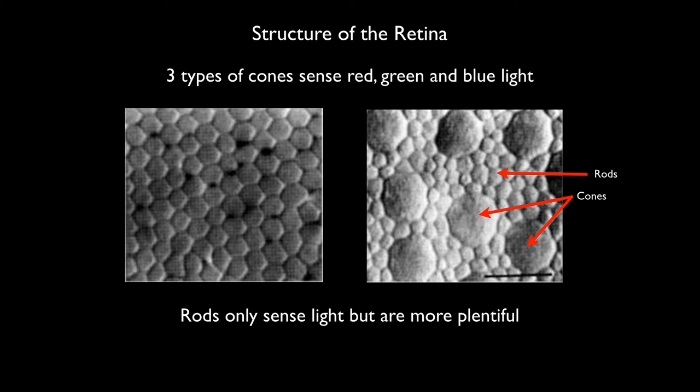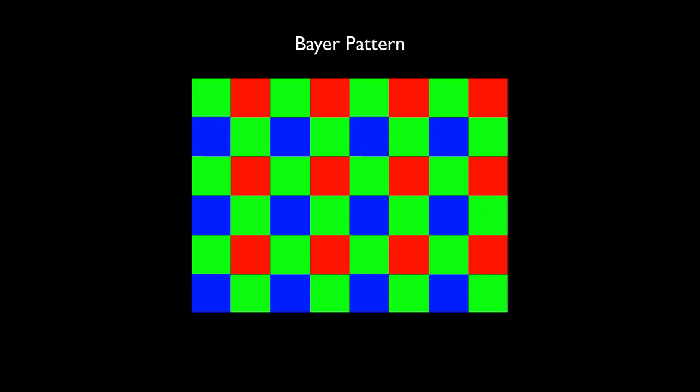Notice how the cones are much larger but actually less sensitive to light. The light-sensitive chip in a digital camera has a simpler structure with only one type of receptor. Each receptor site on the chip is covered with either a red, green, or blue filter. The alternating pattern of red, green, and blue receptors can be thought of as representing red, green, or blue pixels, shown here in the most popular Bayer pattern, where green alternates with red and blue such that there are twice as many green pixels as red or blue.